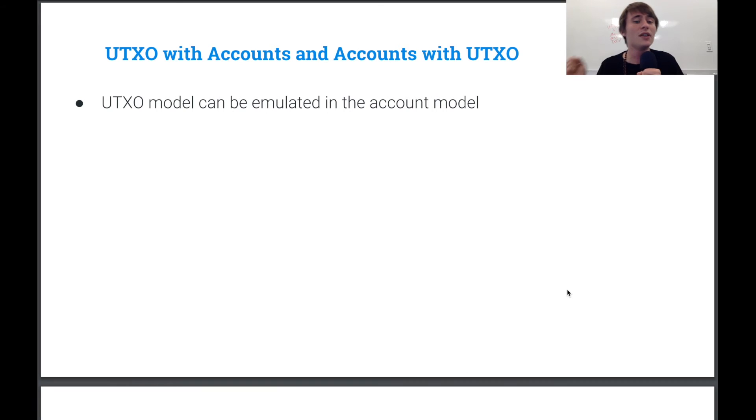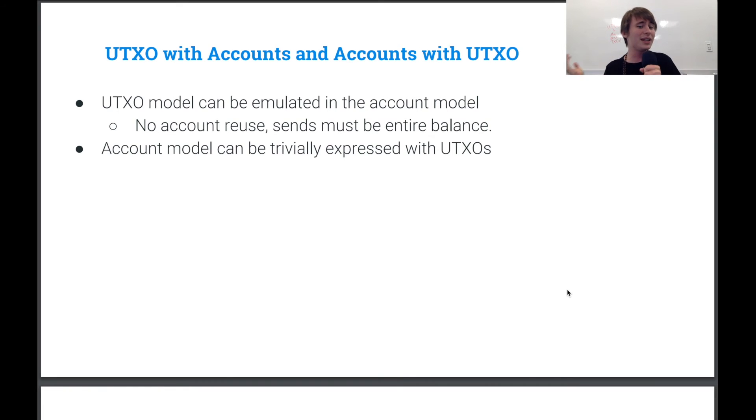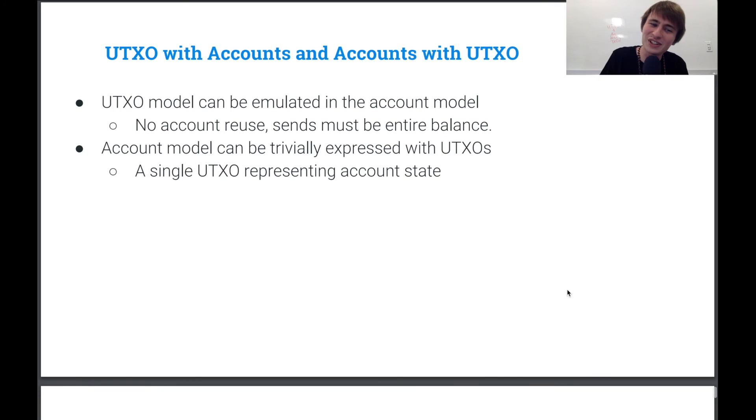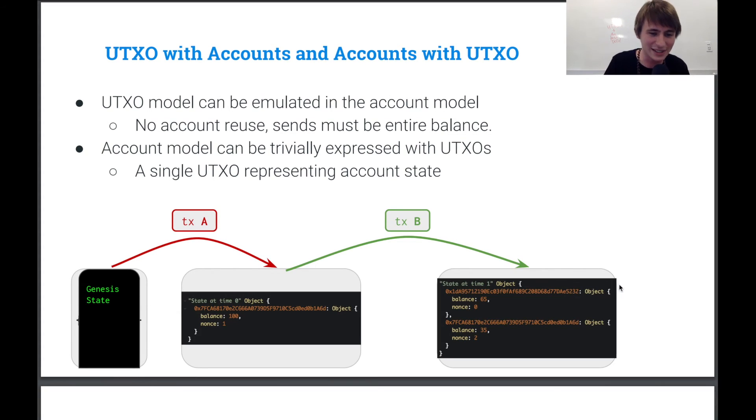So some notes, the UTXO model can be emulated in the account model, you just basically don't reuse accounts and you send all your entire balance, and depends on your implementation once again. Also, the account model can be trivially expressed with UTXOs. All you need to do is you just say, okay, there's a single UTXO, which represents the full account state, and you just spend that UTXO with each transaction, and you generate the next state. So this is exactly our state object from before, but we're just kind of representing it with the UTXO frame of mind.